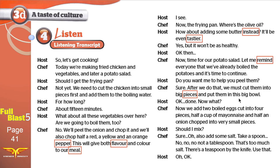And put them in this big bowl. Now we add two boiled eggs cut into four pieces, half a cup of mayonnaise, and half an onion chopped into very small pieces. Should I mix? Sure. Also add some salt. Take a spoon. No, no, no — not a tablespoon. Tablespoon is the big spoon; teaspoon is the small spoon. That's too much salt. There is a teaspoon by the knife — by the knife means next to the knife. Use that.